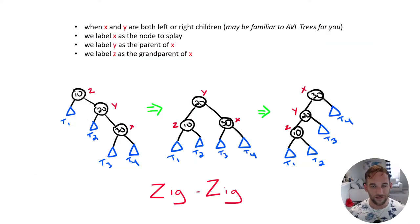So there are several cases for when we do need to do rotations or splay a node to the root of the tree. There are three cases. The first one is called zigzag and these are somewhat familiar to you if you understand AVL trees.